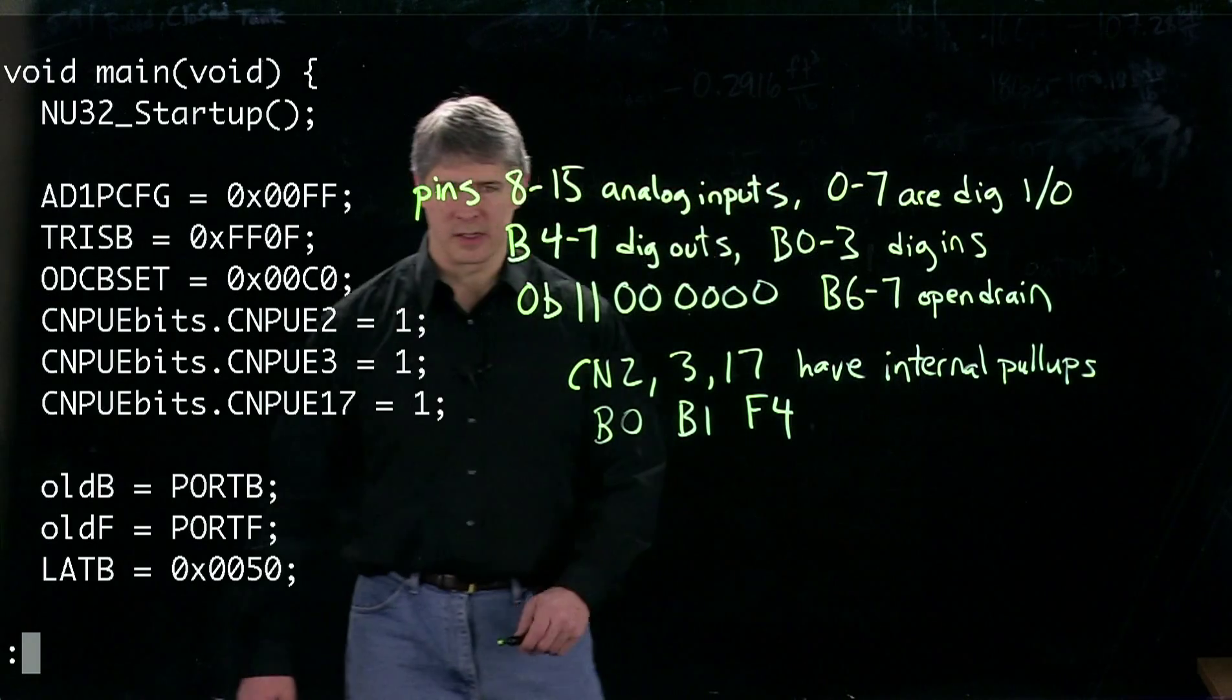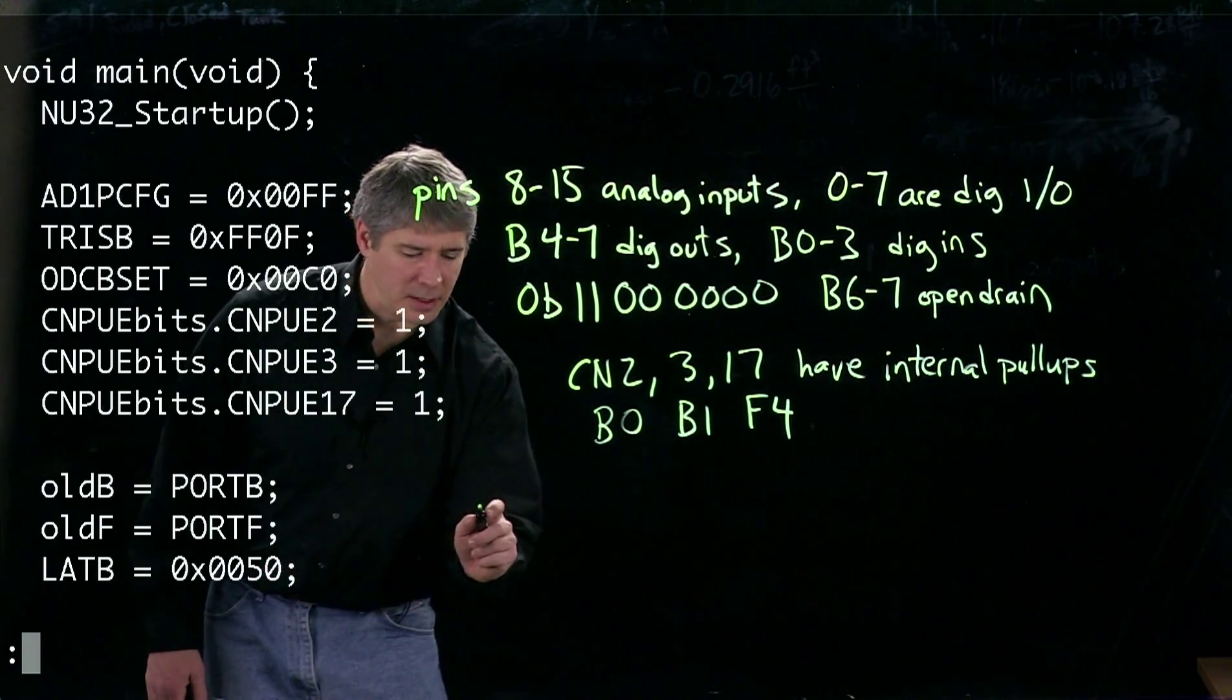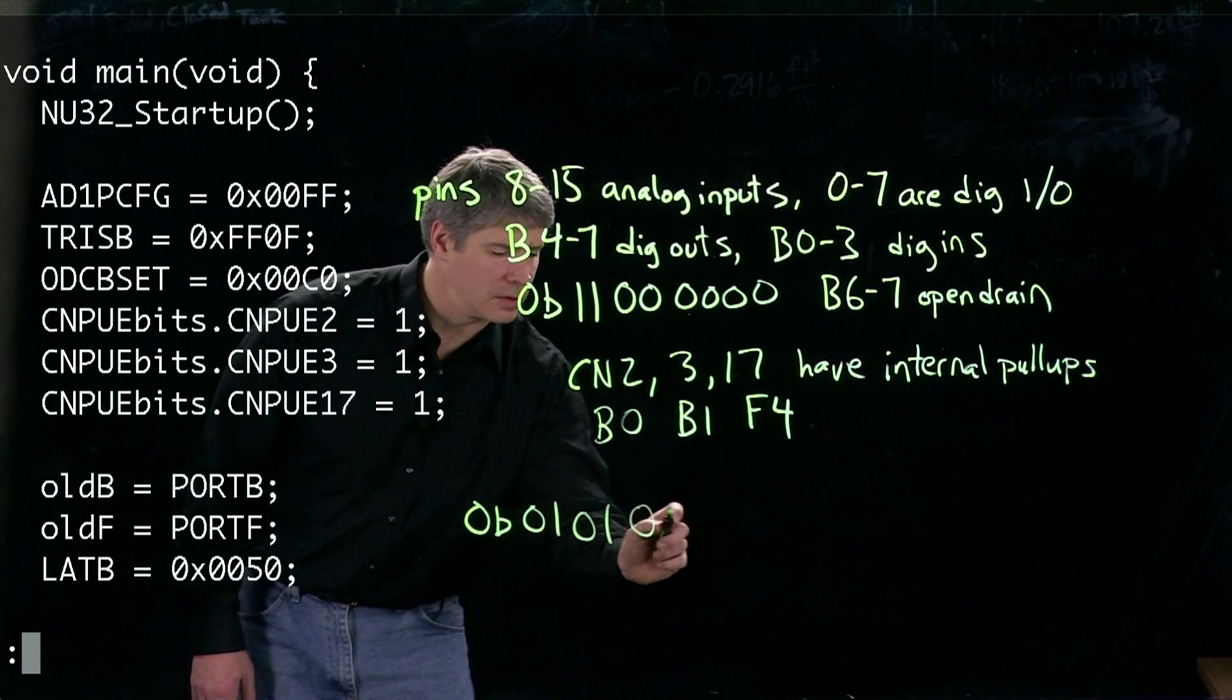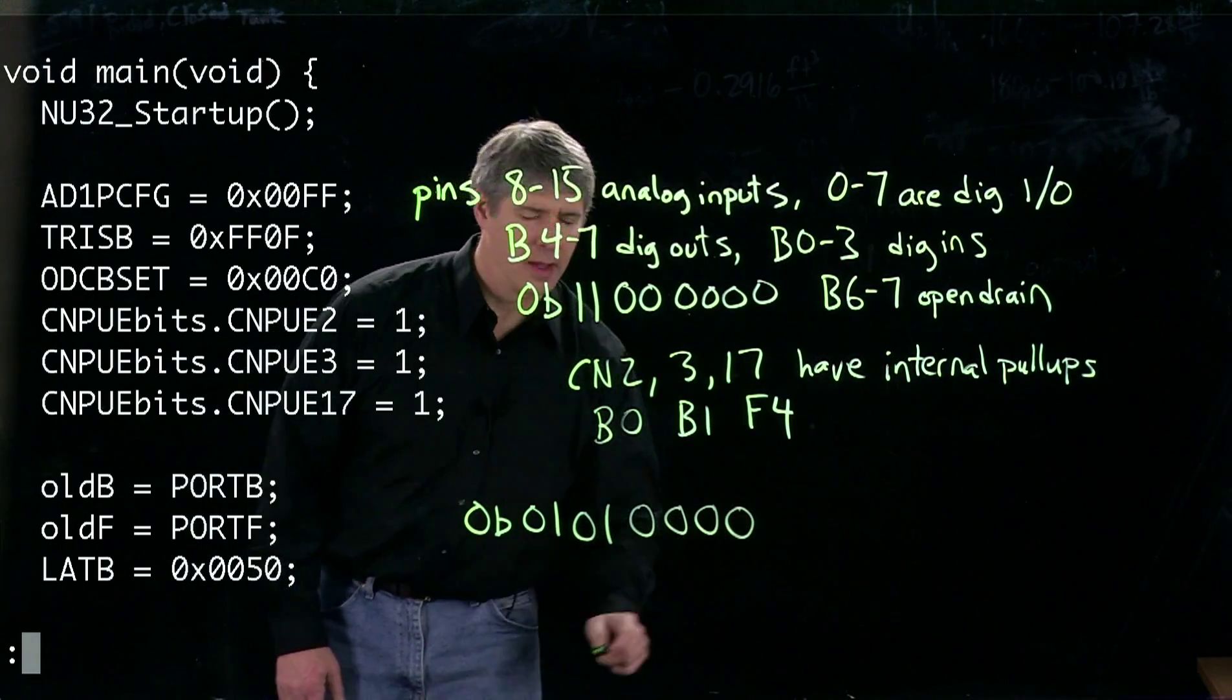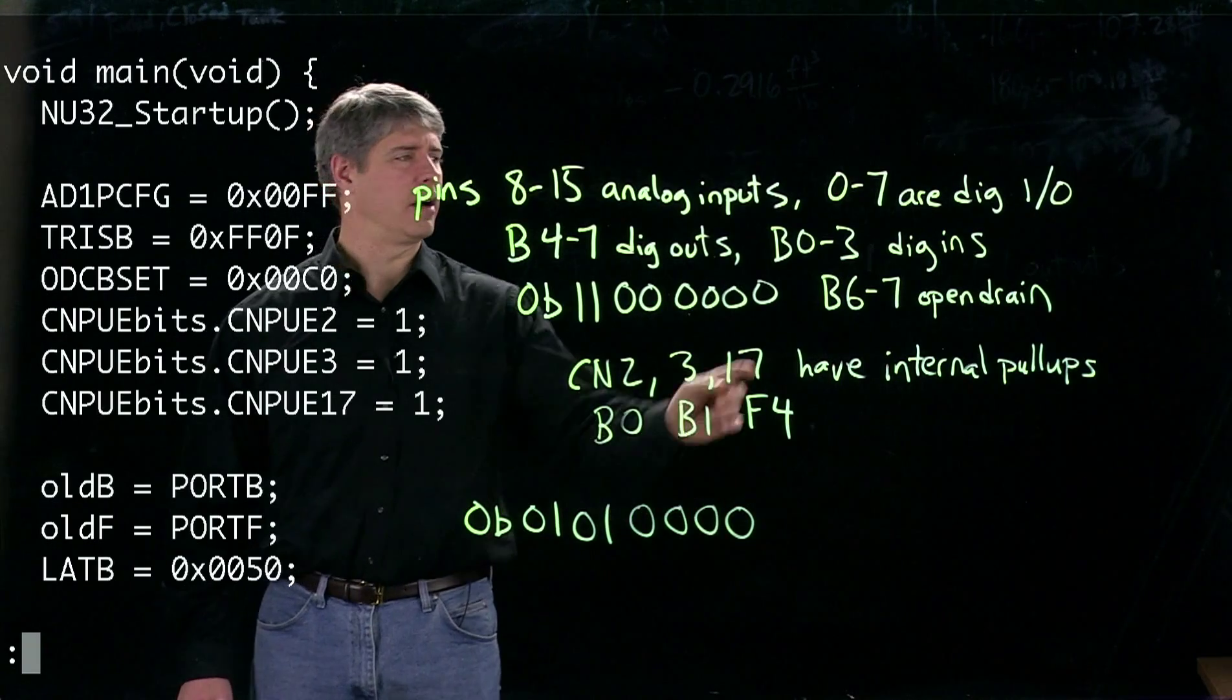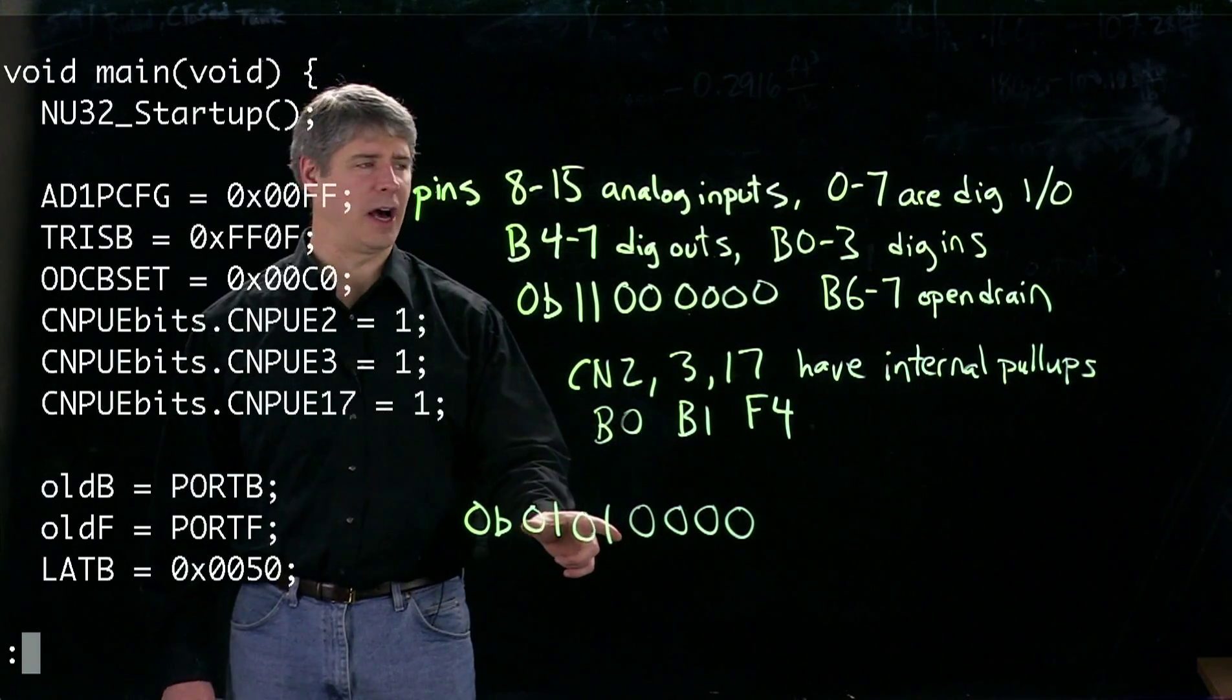If we write this in binary, that 50 becomes 0b01010000. Now these pins B0 are digital inputs, so it doesn't matter what we write there. It only matters for the digital outputs.